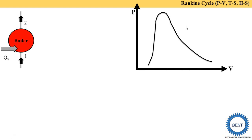Any point on the vapor line or in that region indicates vapor. The area under the saturation curve is the wet region — meaning here there is a mixture of liquid and vapor, i.e., a mixture of water and steam.